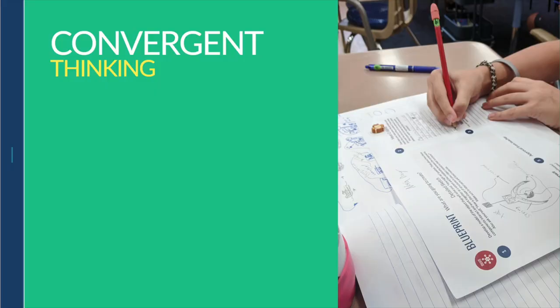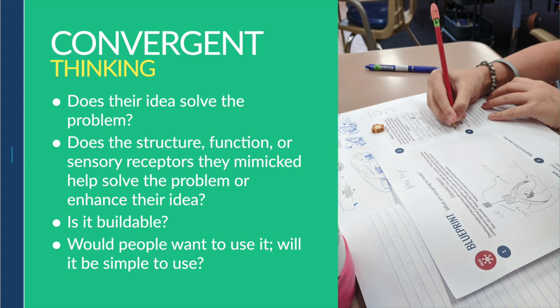After sketching their ideas, it was time to do some convergent thinking. We had students choose one or two ideas they thought were the most desirable, feasible, and viable. We had them ask themselves: Does their idea solve the problem? Does the structure, function, or sensory receptors they mimicked help solve the problem or enhance their idea? Is it buildable — can I create something tangible that communicates my idea, like a prototype? And lastly, would people want to use it? Will it be simple to use?